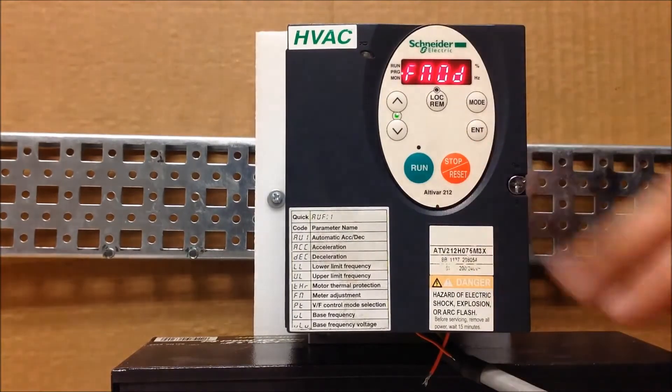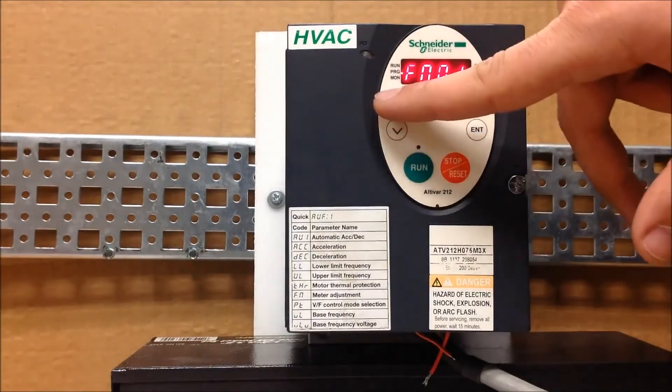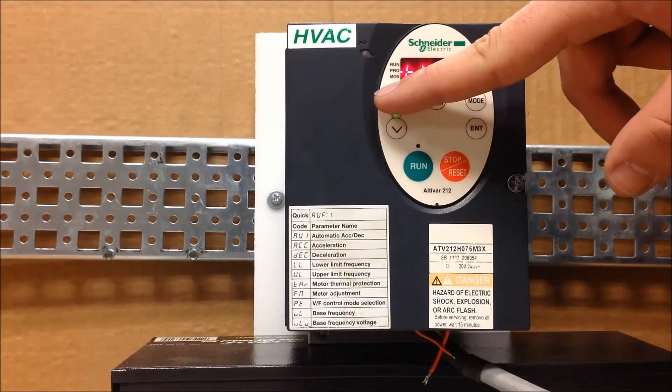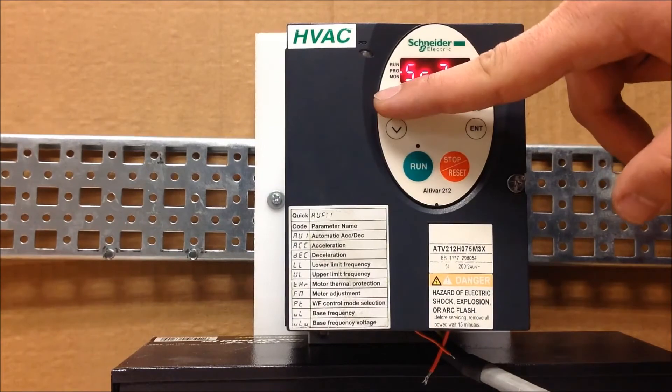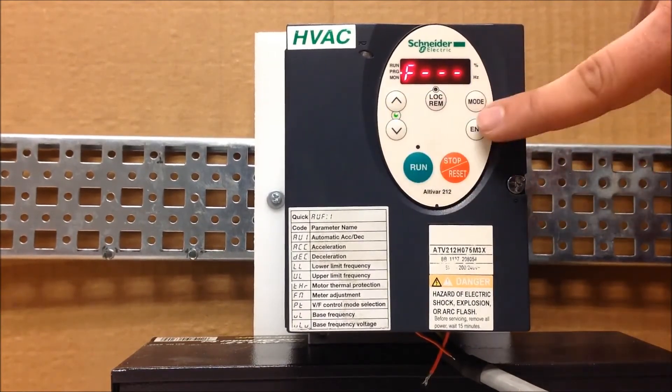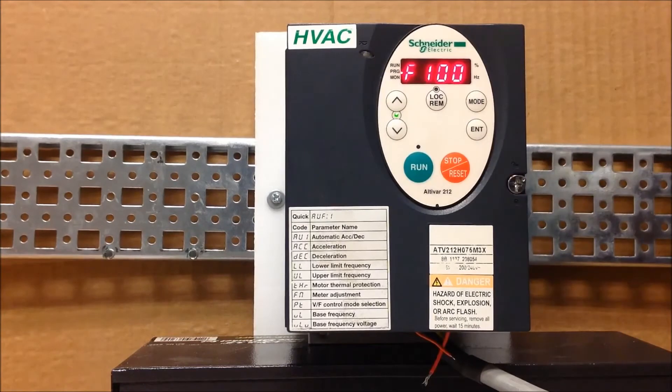Now for the second channel, you have to press mode once you enter and program everything. You go back to your main display and you want to go up to the F as in Frank dash dash dash in this particular list. Enter on F dash dash dash.